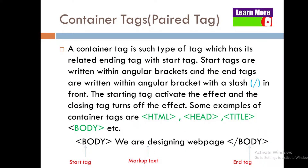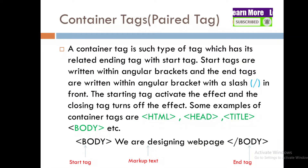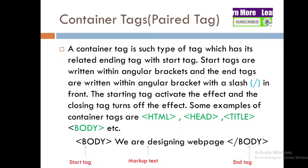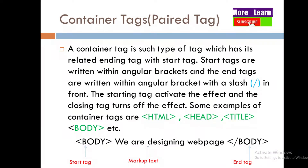The starting tag activates the effect and the closing tag turns off the effect. Some examples of container tags, as you can see in the green highlighted text, are: HTML, head, title, body, etc.